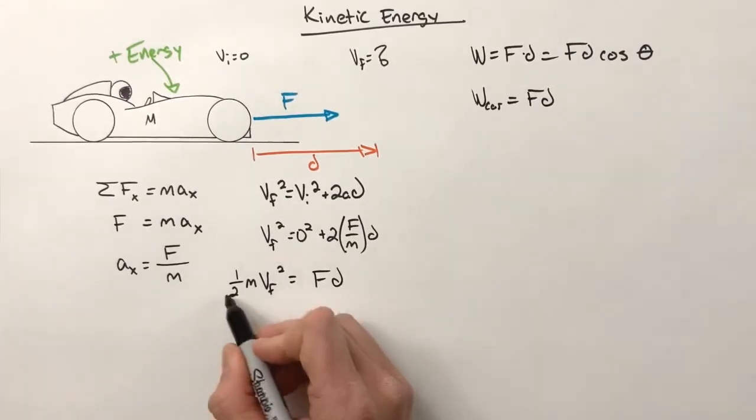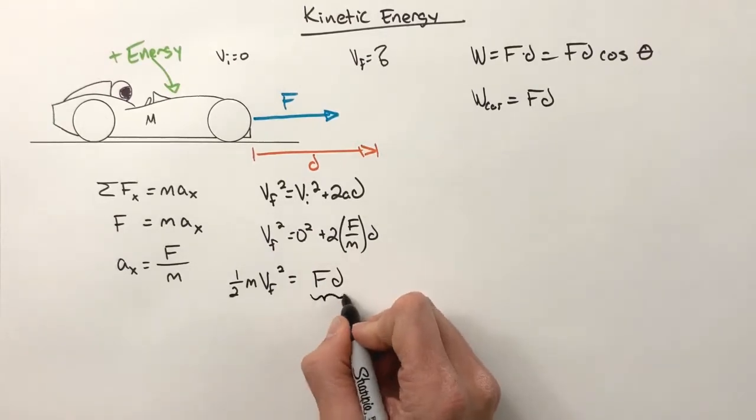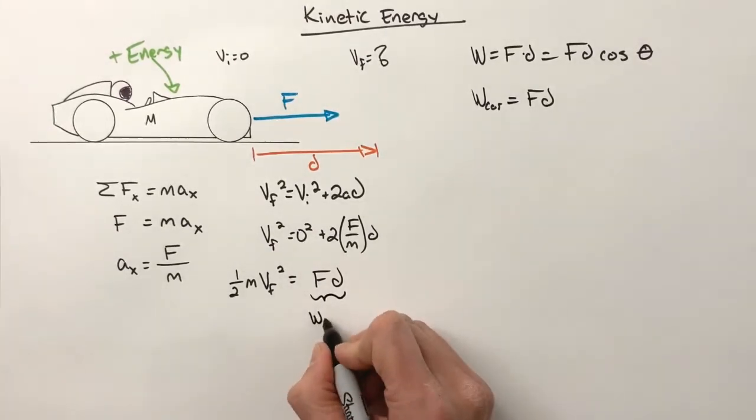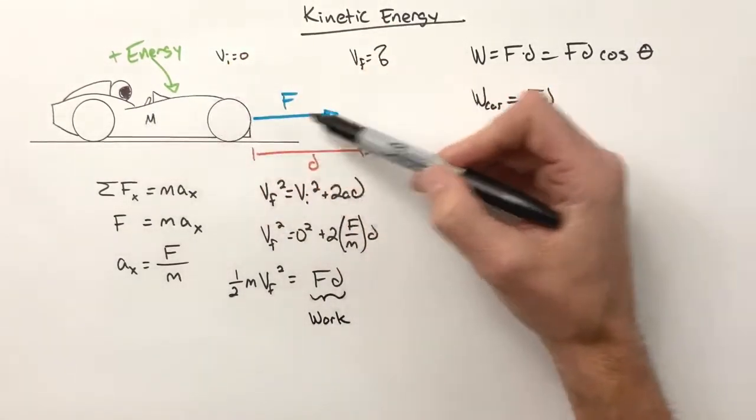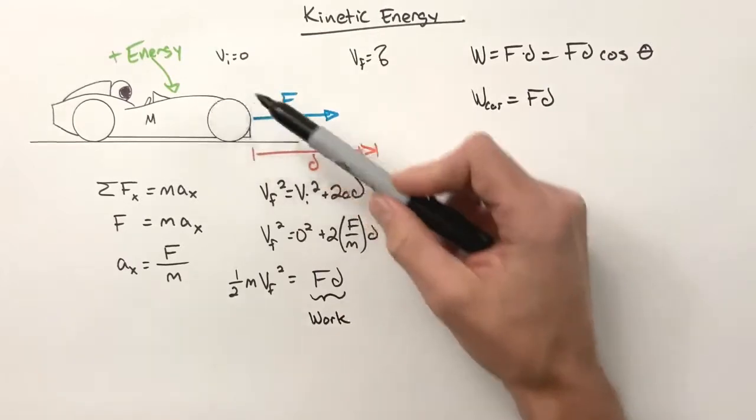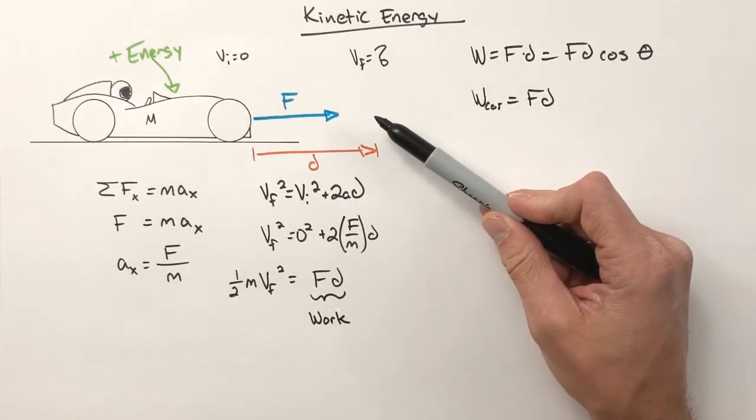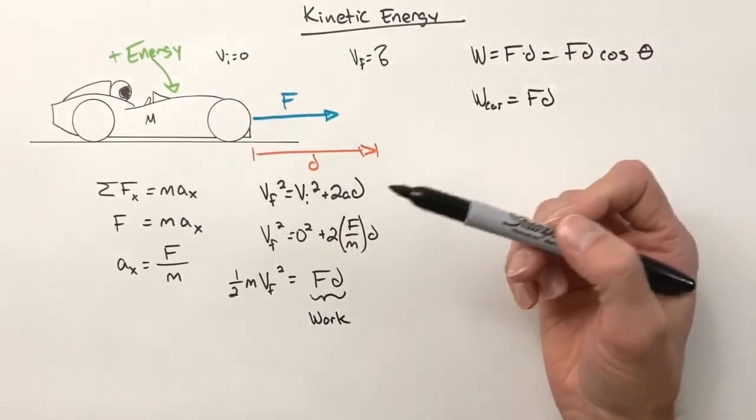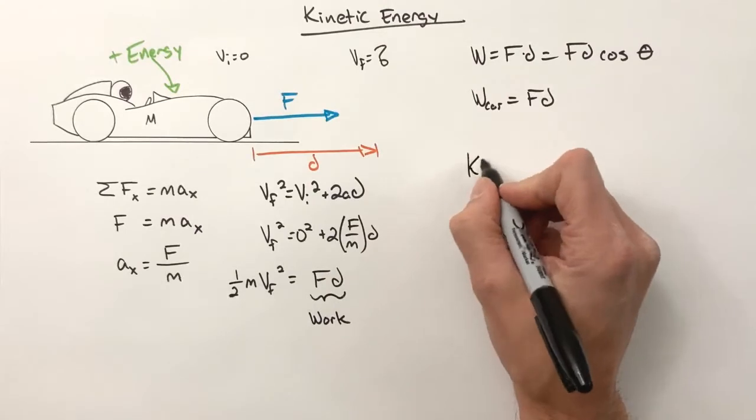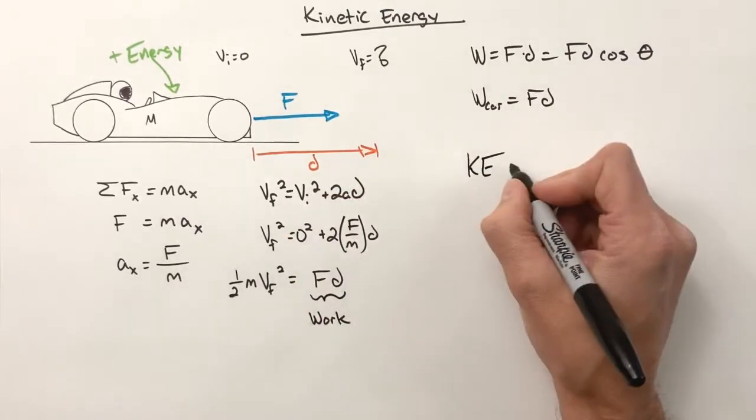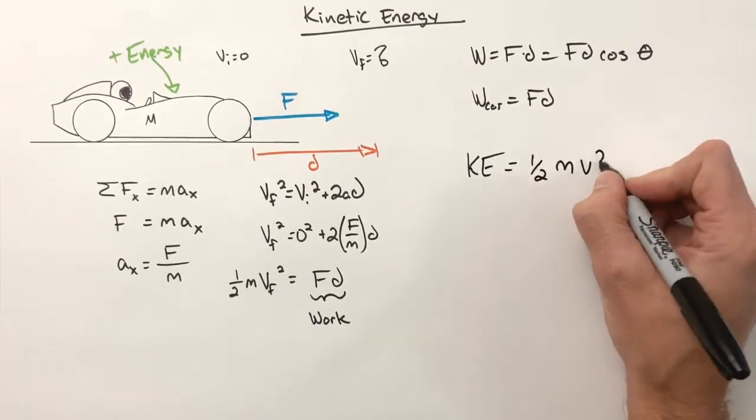I want to go back to this equation that we came up with right here: one half mv_f squared equals this term, which is in fact the work that was done on the car. And we know this work that was done on the car, the energy that went into the car, ultimately caused it to speed up. And so this car has been given energy, and that energy is what we call kinetic energy. The equation for kinetic energy is one half mass times velocity squared.